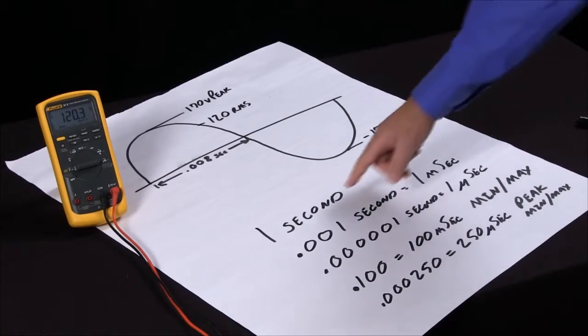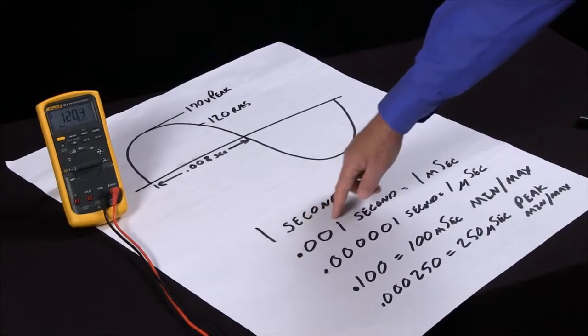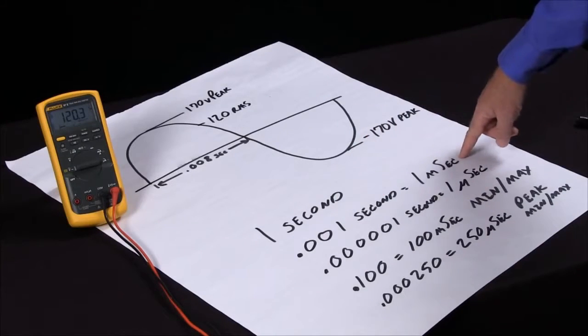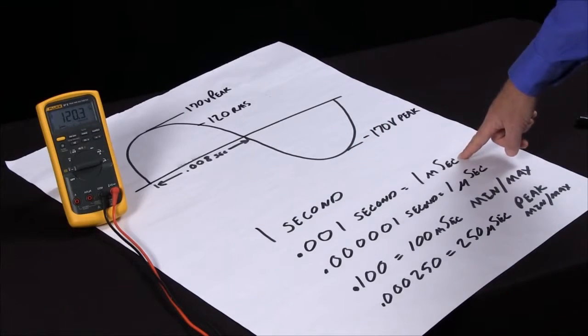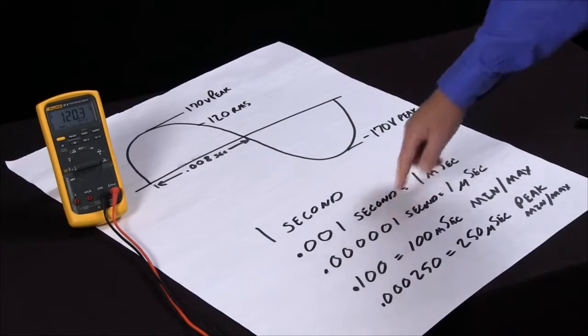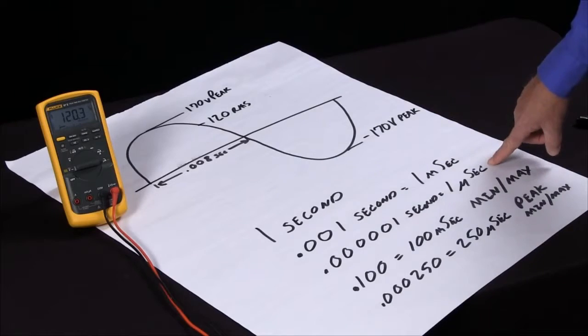A quick review: if we take a second and go three places past the decimal point to 0.001, we're in milliseconds. This is a mechanical type time of transient. If we go six places past the decimal place, we're down into one microsecond.